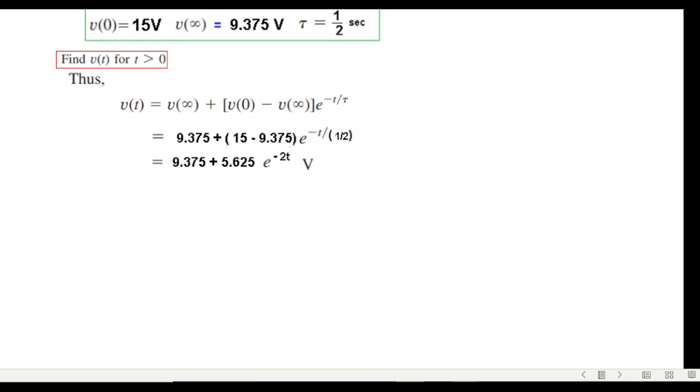Now we come to the second part of this question, which was to find v(t) at t = 0.5. Simply we have to put t = 0.5 here, and putting in the value we get this answer.